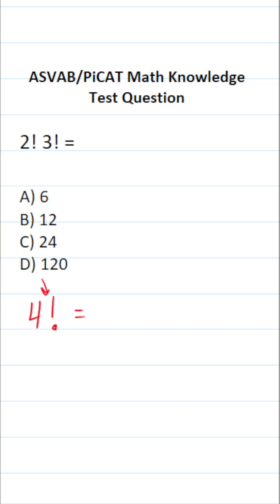It means you take the number that you're given, so we're given the number 4 in this case, and you multiply it by every number that's less than the given number until you get to 1.